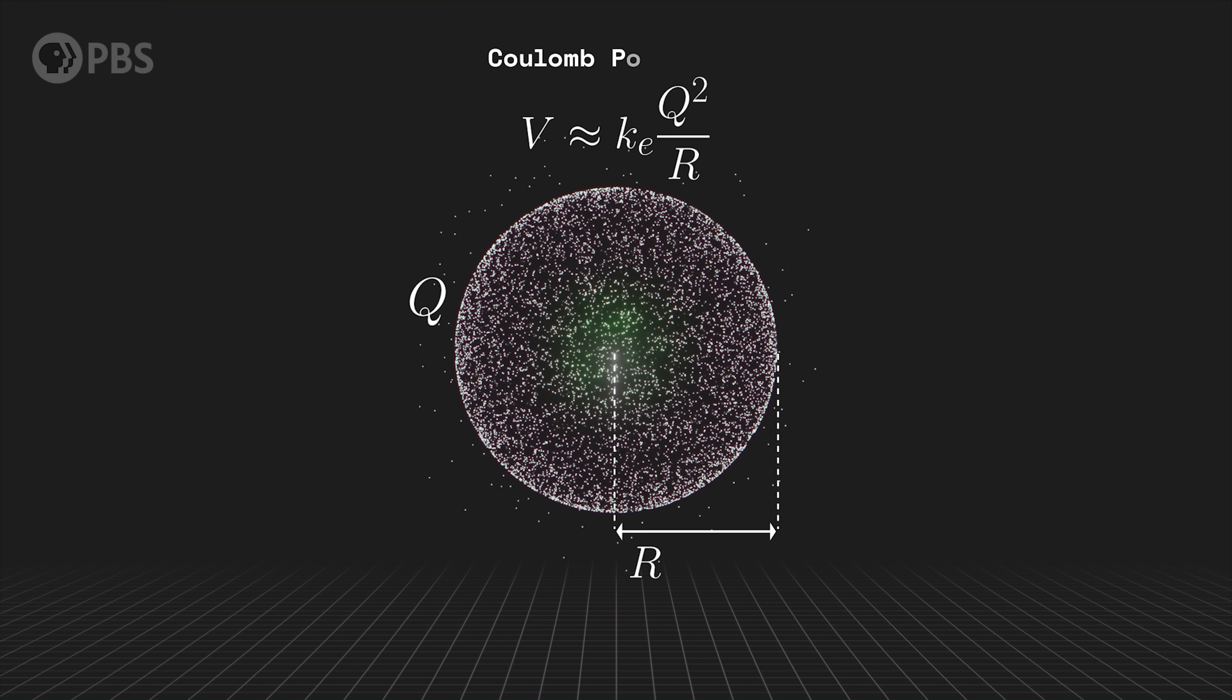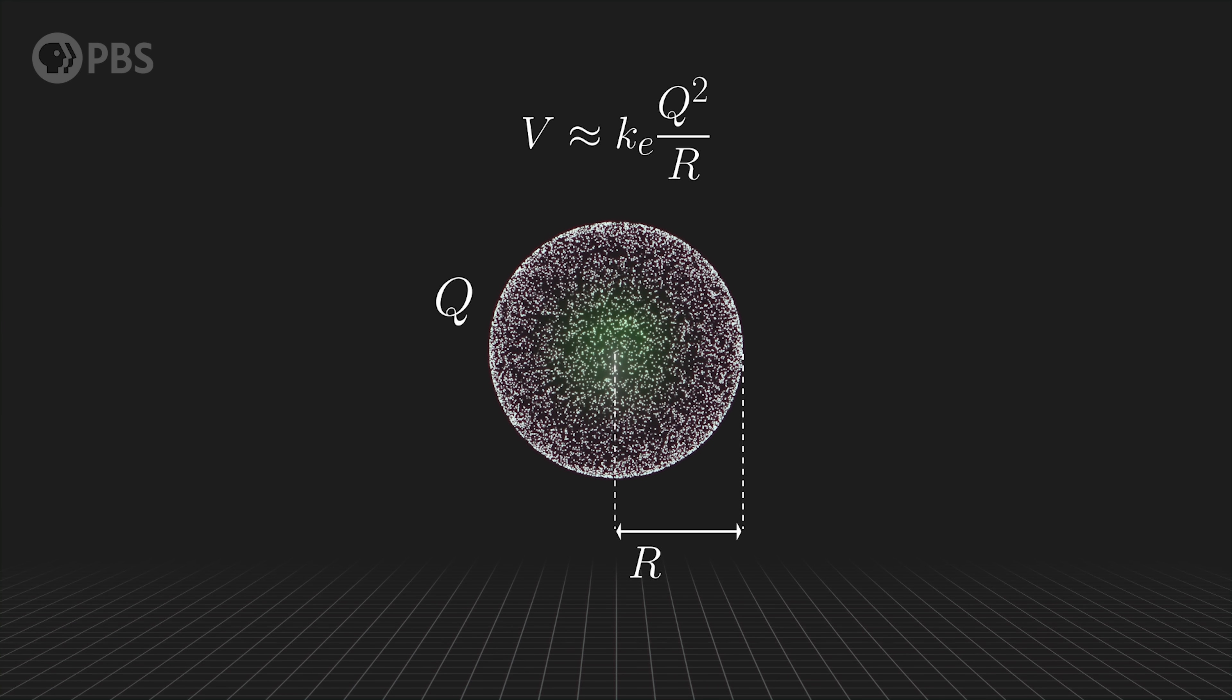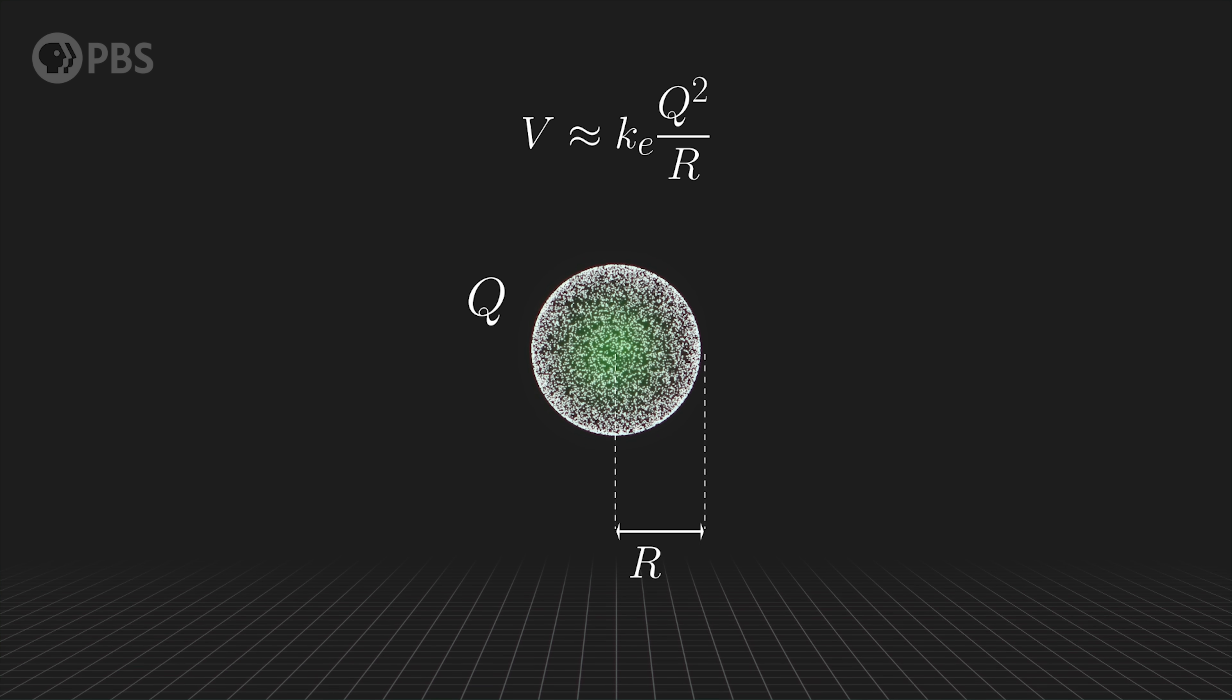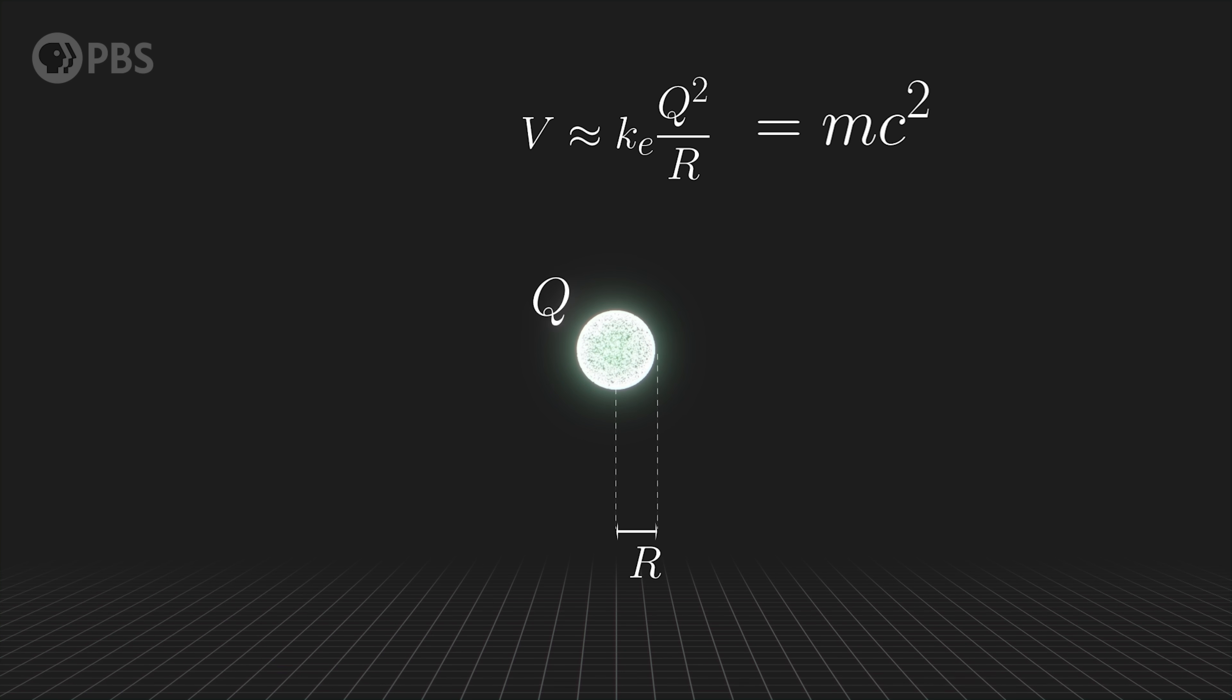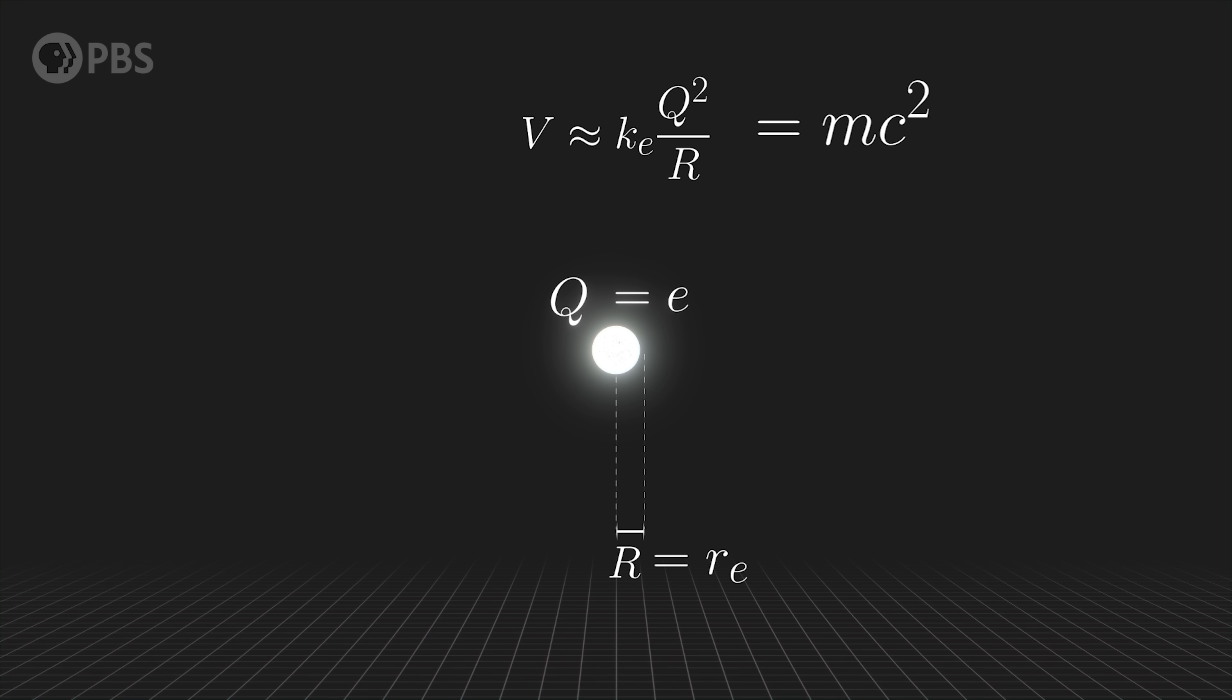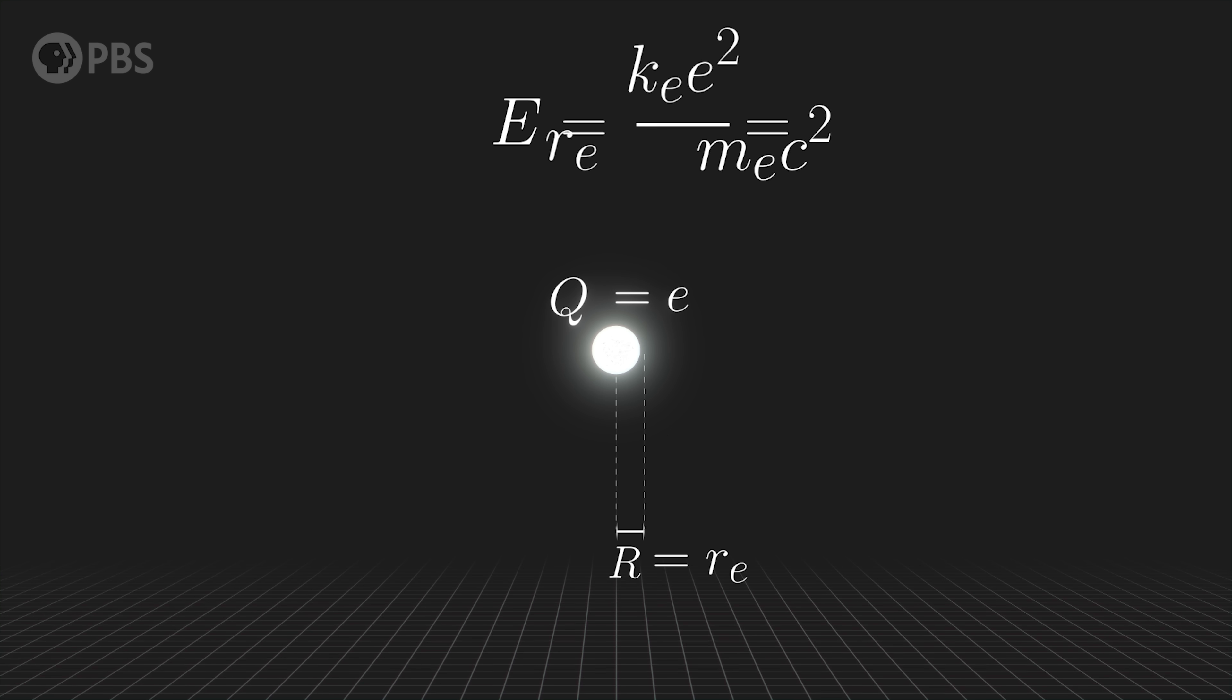A bit of calculus gives us the energy needed to assemble a ball of any given radius. And this is the potential energy that that ball holds after assembled. The smaller the ball, the more energy. From Einstein's relativity, we know that bound energy is equivalent to mass, E equals mc squared. So now we can ask the question. If we drag in one electron worth of electric charge until it's in a small enough ball that its potential energy is equal to the known mass of the electron, how big would that ball be?